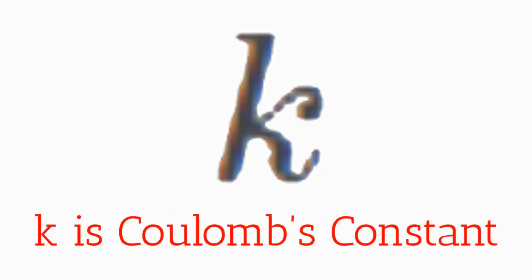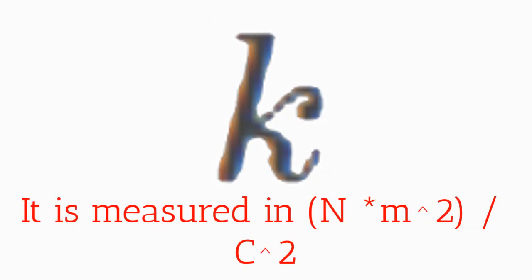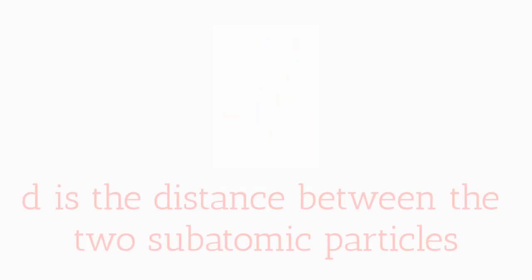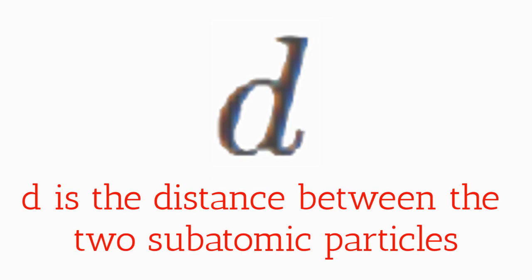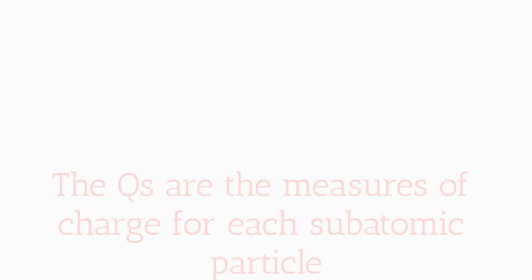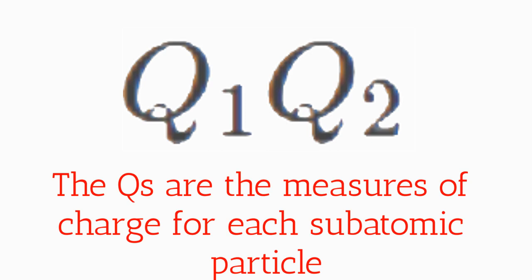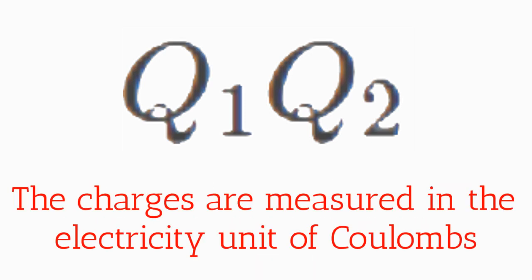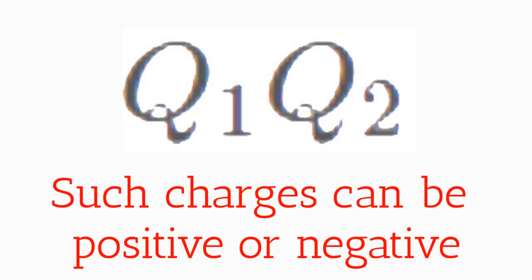k is Coulomb's constant. It is measured in newtons times meters squared divided by Coulombs squared. This value changes depending on the medium in which two subatomic particles are interacting. d is simply the distance between the interacting particles, and it is measured in meters. q1 and q2 are the measures of the charge of each charged particle. Their charges are measured in Coulombs, and the charges can be either positive or negative.